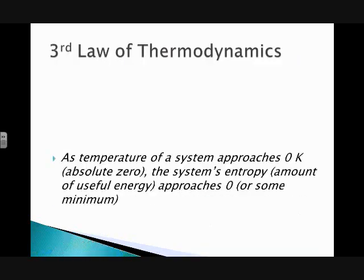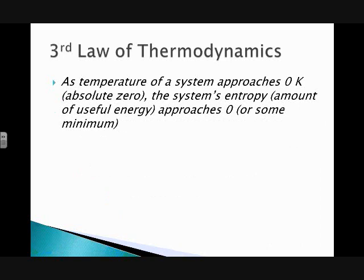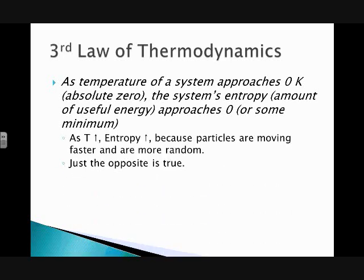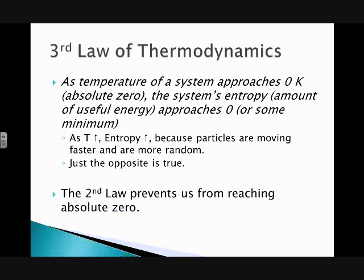The third law of thermodynamics, which a lot of people are familiar with, simply refers to absolute zero. As we approach absolute zero, the entropy of a system approaches zero — the amount of useful energy that the system has approaches zero. As temperature goes up, particles move faster and become more random, so entropy increases. As temperature goes down, entropy decreases. Interestingly, the second law actually prevents us from reaching absolute zero. It's a theoretical point — we've gotten very close, within millionths of a degree, but we can't reach it because of the second law.